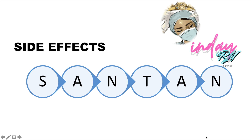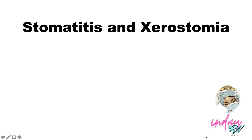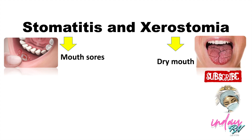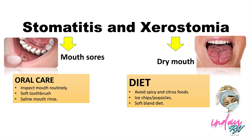The first letter stands for stomatitis and xerostomia. Stomatitis is the medical term for mouth sores, while xerostomia means dry mouth. Since we are referring to the mouth, we need to do oral care. Inspect the mouth routinely to check for development of stomatitis. Use a soft toothbrush because it is painful for the patient — using a soft toothbrush prevents damaging the stomatitis and prevents bleeding. Use saline for mouth rinsing.